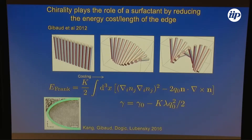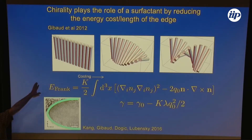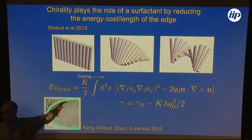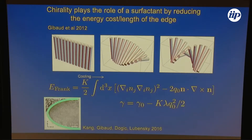The top panel is just saying that the rods themselves have an intrinsic desire to twist as a function of temperature. The top is a nematic at high temperature, and then it becomes cholesteric as you lower the temperature below 60 degrees. So you can tune the intrinsic desire to twist by changing the temperature. That's just a fact about the liquid crystal that you can make out of these viruses.